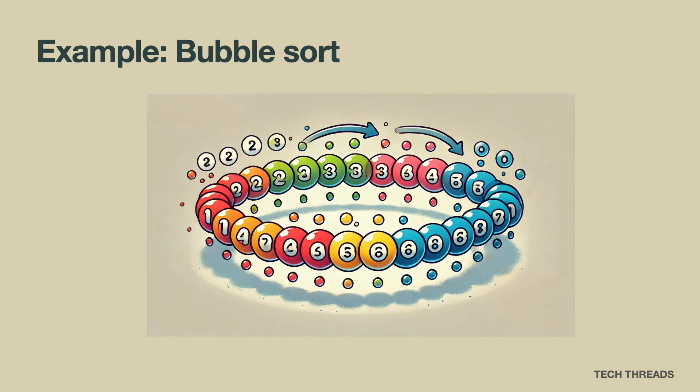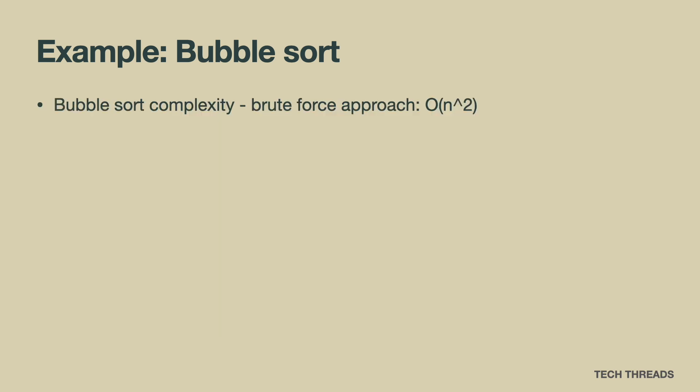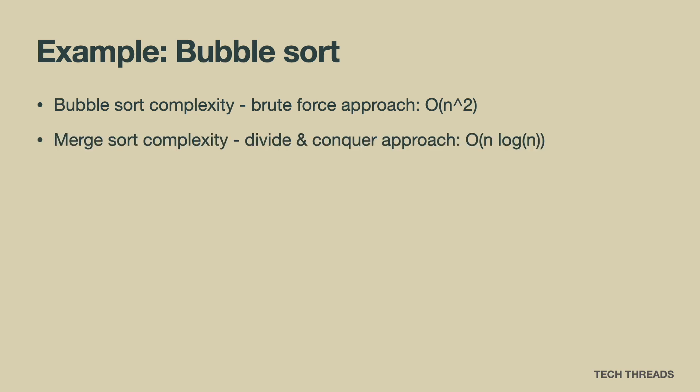BubbleSort is an example of a brute force algorithm, which goes through an array of unsorted numbers and systematically compares and swaps adjacent elements. Every pair of elements is checked until no further swaps are needed. It sorts arrays in a time complexity of O(N²), significantly slower than if we were to have employed other strategies, such as divide and conquer in the form of merge sort, which would have had the quicker time complexity of O(N log N).